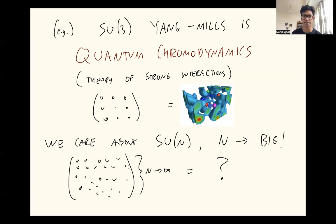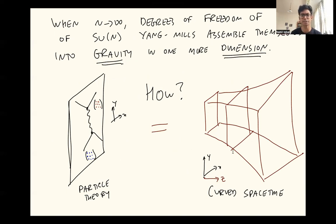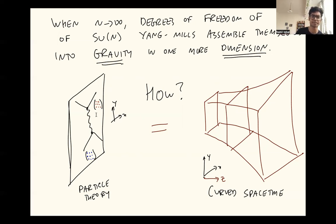Let me tell you a little bit about how that's meant to work. When N goes to infinity, the degrees of freedom of this SU(N) Yang-Mills theory somehow assemble themselves into gravity in one higher dimension. Your basic question should be: how can this be? Where is the information of this extra dimension coming from? How is it stored in this Yang-Mills theory? And what's interesting is it's actually stored in a very easy to understand way. I'm going to call the extra dimension Z — the extra dimension that appears on the gravitational side. I want to explain how stuff that is localized at different points in this extra Z dimension is stored in this Yang-Mills theory.